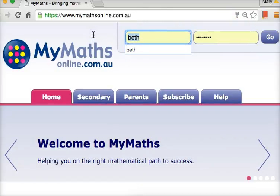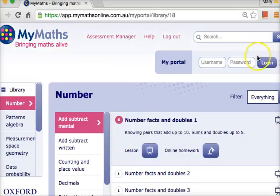The username is Beth and the password is tangent1 - T A N G E N T 1. I know you can't see that, so I'll repeat it again: T A N G E N T 1, tangent1, and then press go.